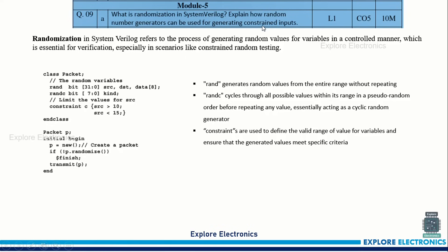Module 5 is about randomization. The first question: what is randomization in SystemVerilog, and explain how random number generators can be used for generating constrained inputs. First explain what randomization is and how random values are generated for inputs while generating the stimulus. Then take an example showing how the randomize() function generates different random values. Show one constraint — constraint c is defined — and explain some condition in the constraint. Since it is for 10 marks, you need to elaborate and give multiple examples, adding one more constraint for dst data as well.